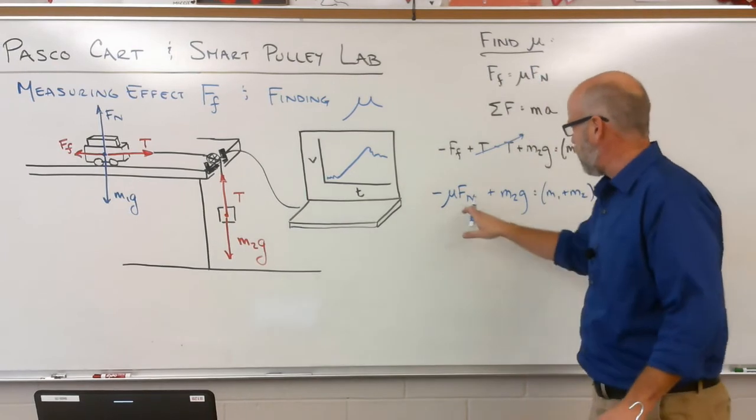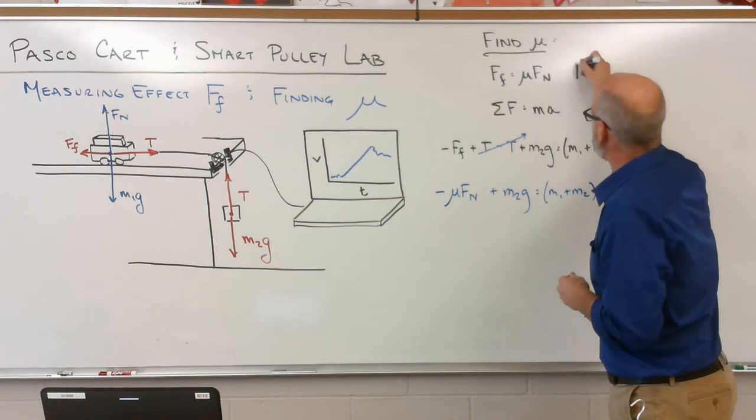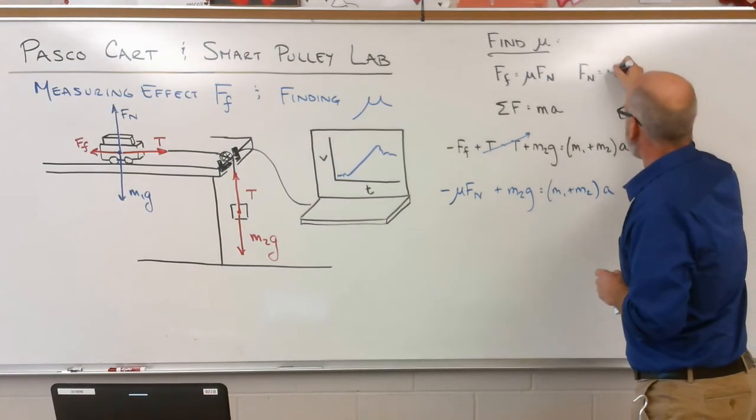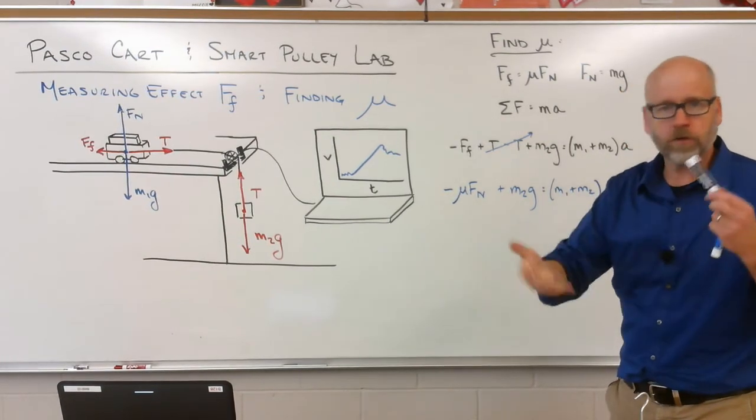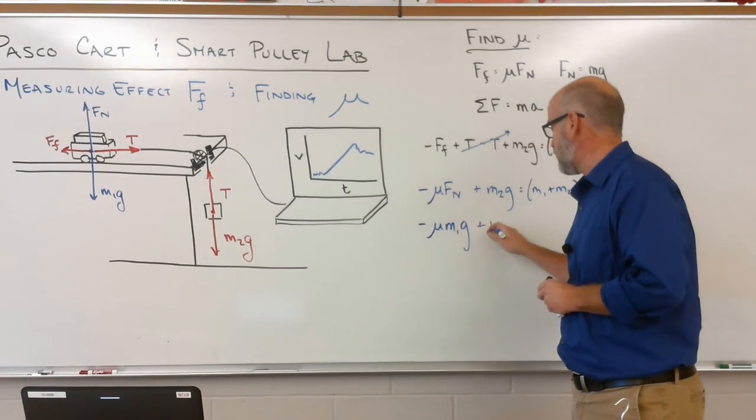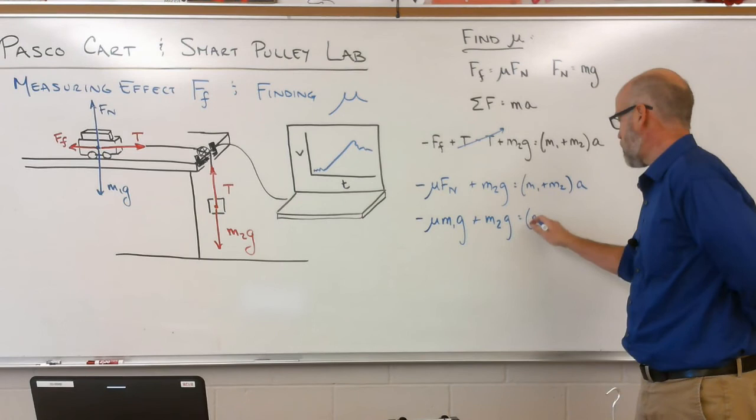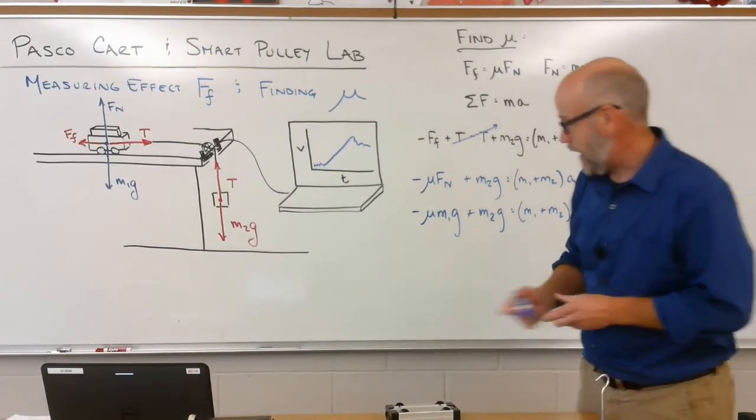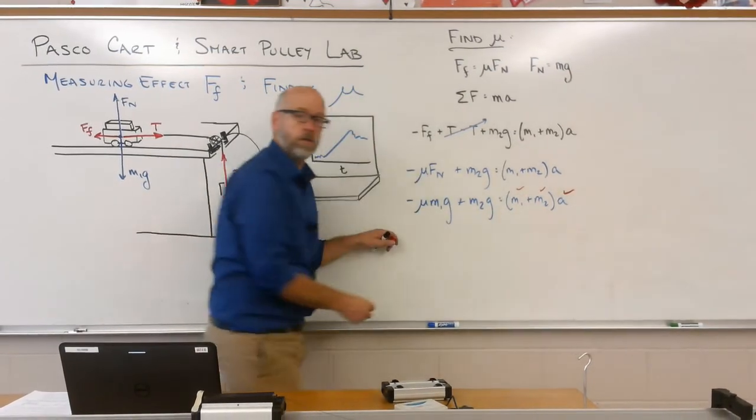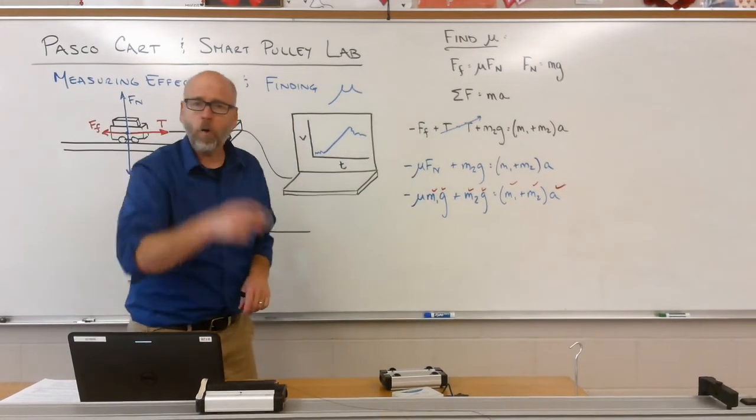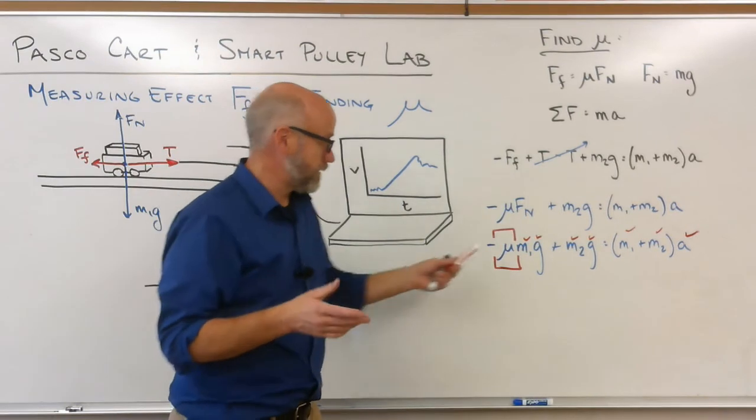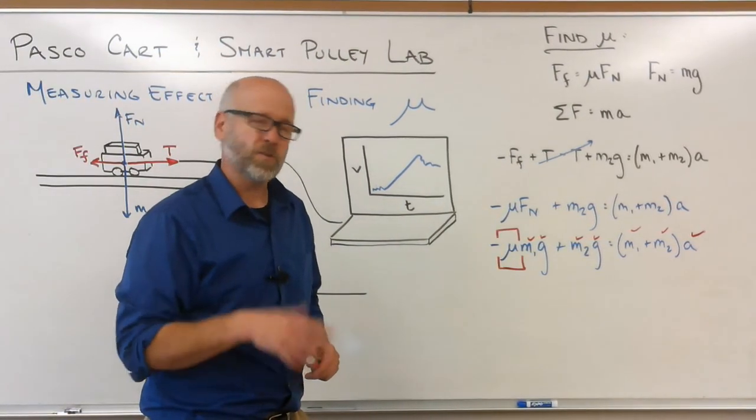Now there's one more substitution I want to do, which is I know that the normal force on a flat surface, that changes next class, so pay attention. But for now, on a flat surface, that normal force is going to be equal to Mg when there are no other vertical forces involved. So I'm going to do one more substitution. You get minus mu M1G plus M2G causes the masses to accelerate. But this time, we actually know the experimental acceleration. We also know the masses. And we know gravity. So we know everything in this equation except for mu. And I'd like you to solve that value. I'd like you to solve mu for all three systems so we can compare it and see if it changes.